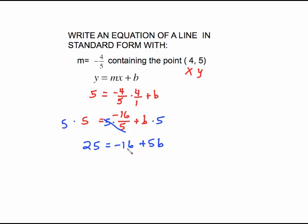Let's multiply everything by that denominator of 5, which is going to get rid of the fraction. 5 times 5 is 25. The 5s cancel out. We have negative 16 plus 5b. Two-step equation to solve. Add 16 to both sides, giving us 41 right here. Divide both sides by 5, and we get 41/5. That's our b. Go back and write your equation. y equals the slope you had times x plus the 41/5. I'll let you do the check on your own. Plug 4 in for x, put 5 in for y, and you'll see that it works.